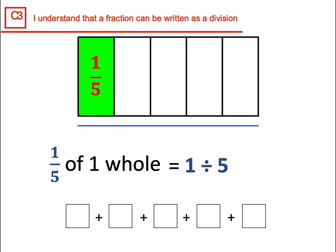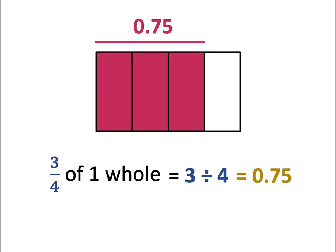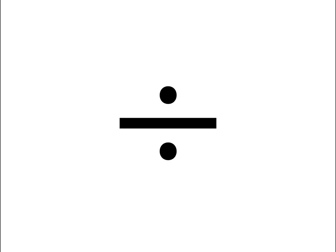A fraction can represent division. One out of five is the same as saying one divided by five, which equals 0.2. How about three-quarters? Three-quarters represents the calculation three divided by four, which is equal to 0.75. The division symbol is a clue for this—the symbol is a fraction.